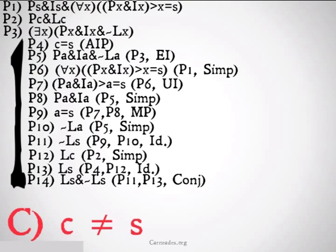Premise 11, premise 13, conjunction. Finding a contradiction, we can go ahead and conclude that our original assumption was not the case. It's not the case that C is identical to S from premises 4 through 14, indirect proof. And as we've learned in this video, that's just going to be identical to our conclusion of C is not equal to S, or C is not identical to S.